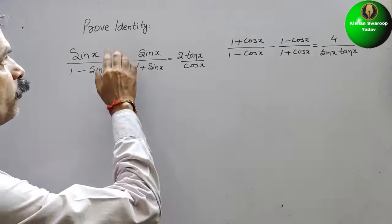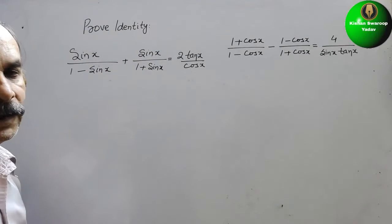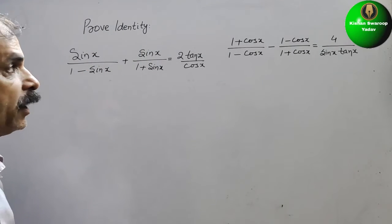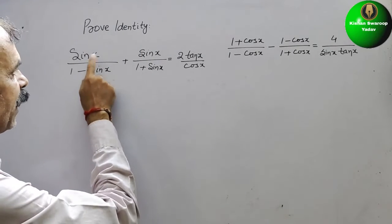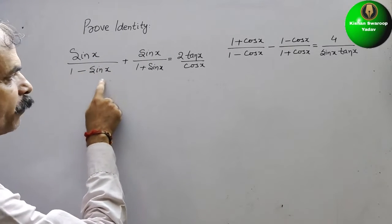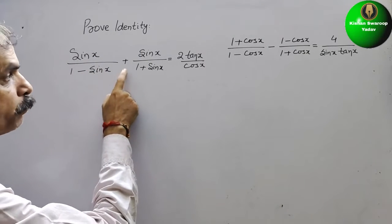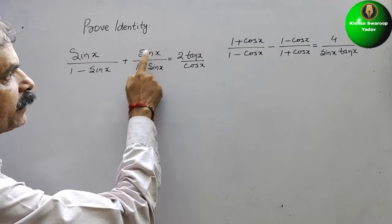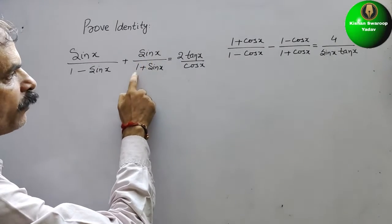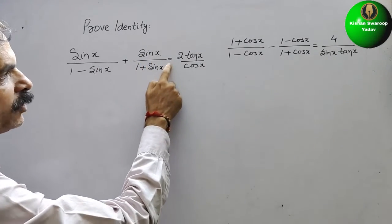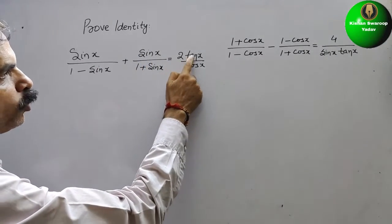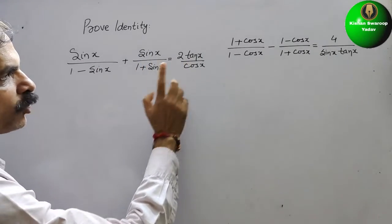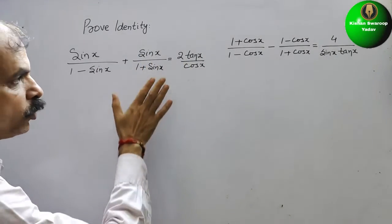The question is to prove the identity. What they have given is: sin x / (1 - sin x) + sin x / (1 + sin x) is equal to 2 tan x / cos x.